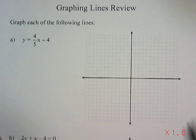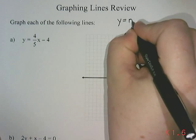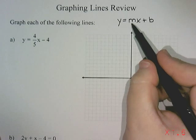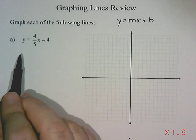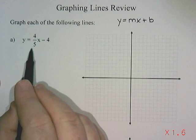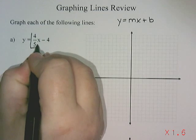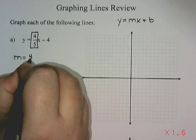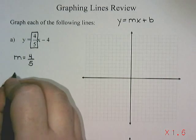So the basic equation of a line that we've been talking about is y equals mx plus b, where m is the slope and b is the y-intercept. So in this equation here, we have y equals 4 fifths x minus 4. So 4 fifths is my slope, and the negative 4 is my y-intercept.